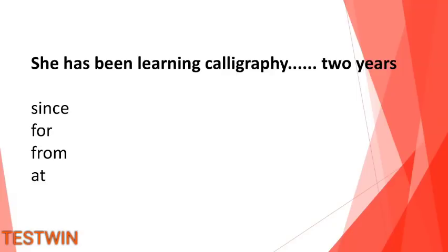We use "since" with a particular point of time — since 2015, since March, since June, since 2000, a particular day, a particular year. Example: she has been learning calligraphy for 2 years; she has been learning calligraphy since 2000.